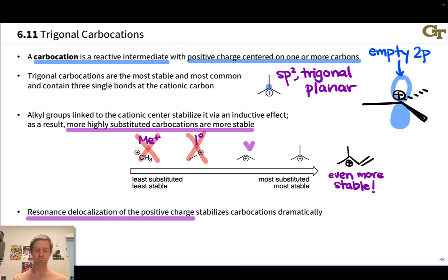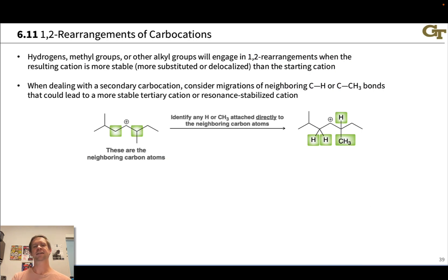Secondary carbocations, while not terribly stable, can form. And tertiary carbocations are stable enough that they form quite frequently. So when we end up with a secondary carbocation in the midst of a reaction mechanism, we'll want to look out for potential rearrangements.